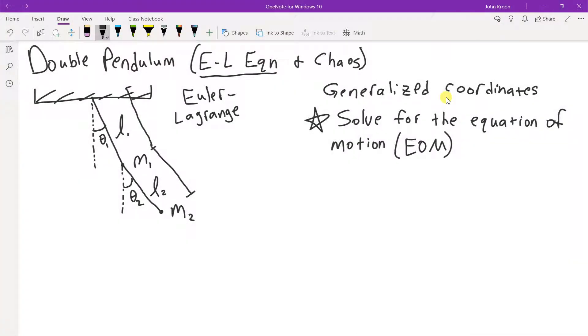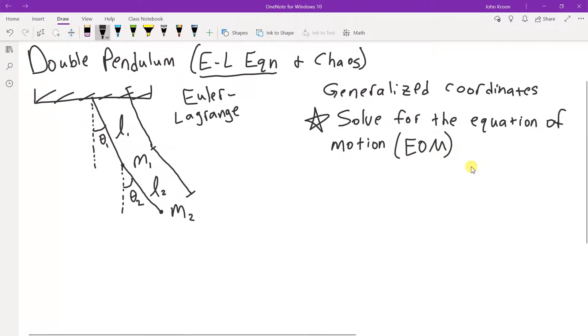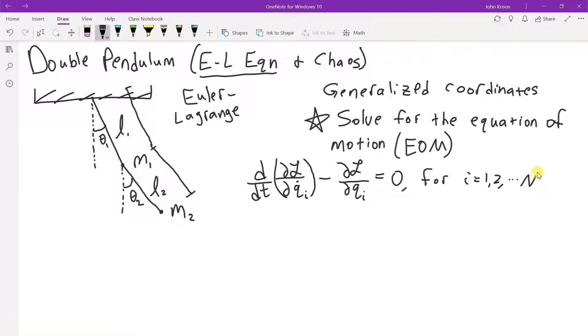Okay, so the first thing we have to do when we are trying to find the equations of motion of the system is to write down first what is the Euler-Lagrange equation, in case you're unfamiliar with it. And that equals zero for i equals one, two, all the way to however many there are.